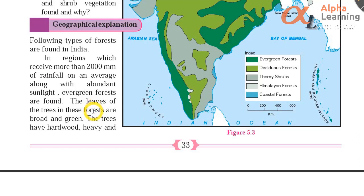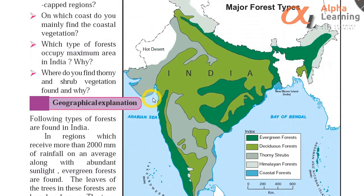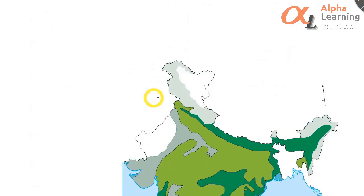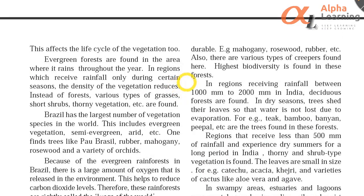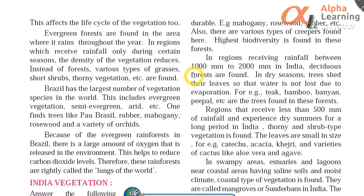The leaves are broad and green. The trees are hardwood, heavy and durable. For example, mahogany, rosewood, rubber, etc.